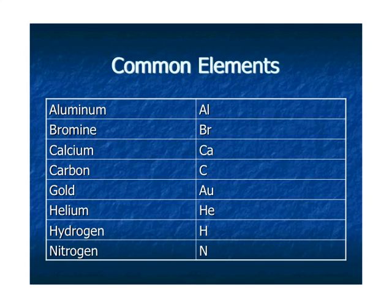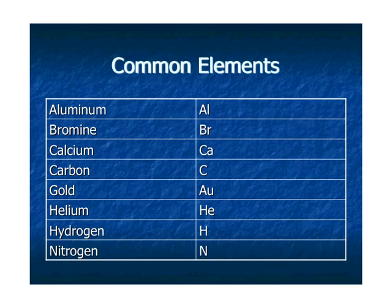Here are some examples of common elements. You can see that carbon got the C, and then calcium uses the first two letters of calcium — CA. Hydrogen got the H, and then helium got HE.